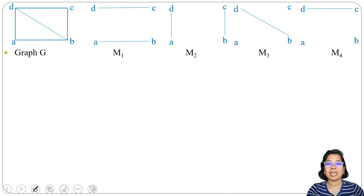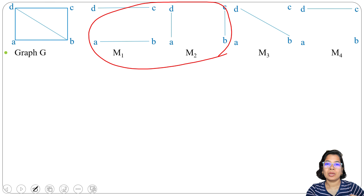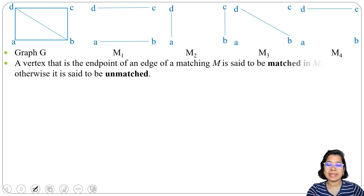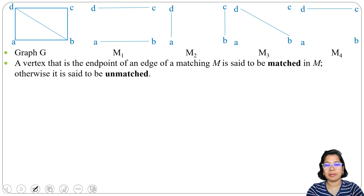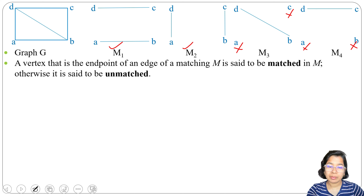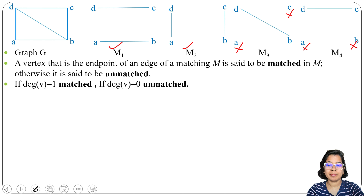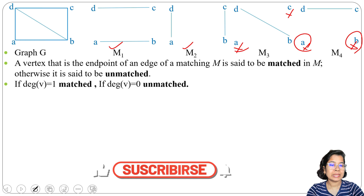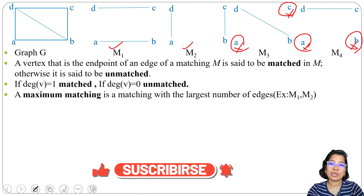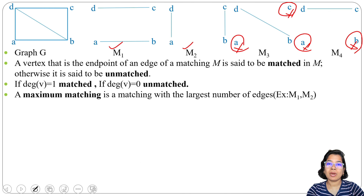There are four matchings M1, M2, M3, and M4. M1 has edges C-D and A-B. M2 has edges A-D and B-C. M3 has edge B-D only. M4 has edge C-D and A-B. Maximum matchings are M1 and M2, having the maximum number of edges. A vertex that is an endpoint of an edge in matching M is said to be matched; otherwise it is unmatched.